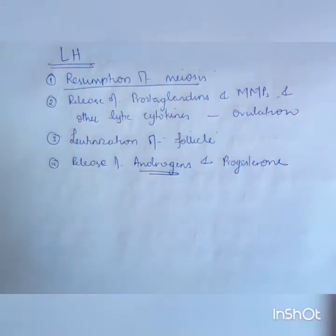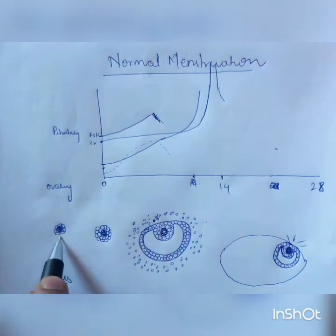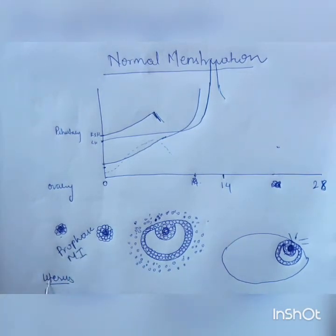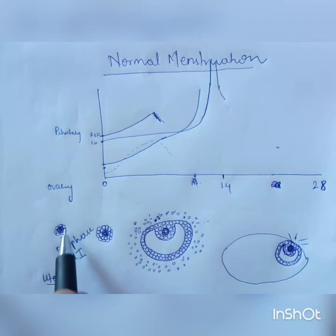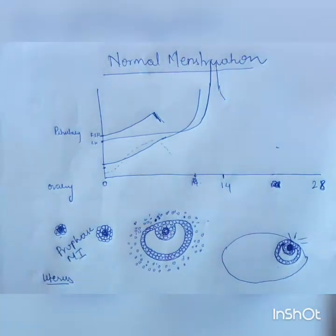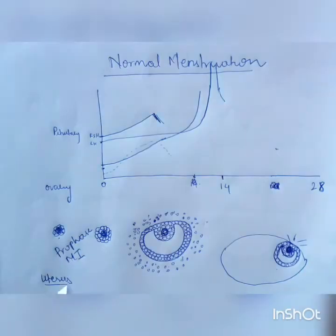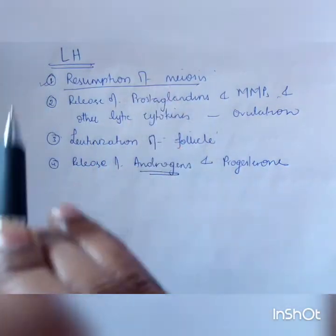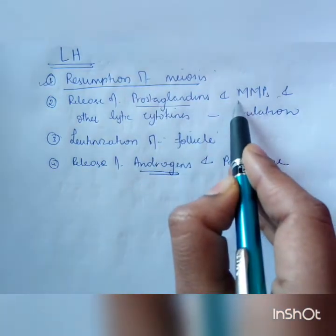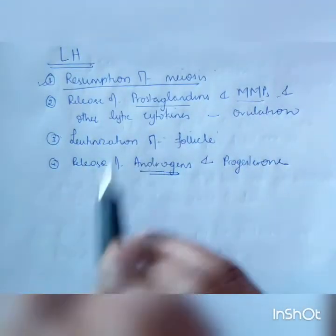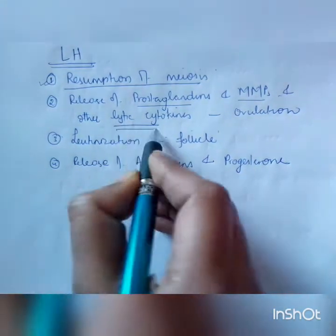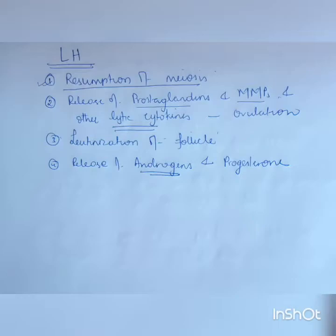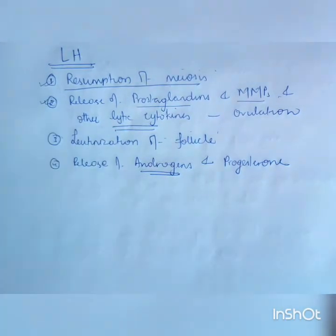LH causes resumption of meiosis. The oocyte in the primordial follicle is arrested in prophase of meiosis 1 — specifically the diplotene stage. The oocyte must extrude its first polar body at the time of ovulation. Meiosis resumption — progressing from prophase 1 through metaphase — occurs only if LH is present. LH also causes release of prostaglandins and matrix metalloproteases by the granulosa and theca cells. These are lytic cytokines which cause lysis of the follicle wall, resulting in ovulation and extrusion of the first polar body.